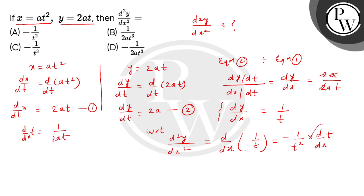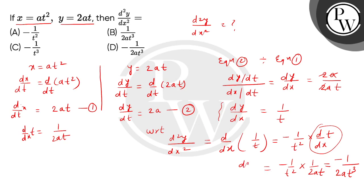तो इसको put कर देंगे इस expression में. So this is minus 1 by t square, multiplied by 1 by 2at. So हमें यह answer मिलेगा: minus 1 by 2at cube. So this is d square y divided by dx square जो कि required है. So correct answer is option number D. Thank you.